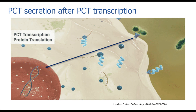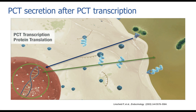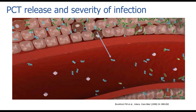Once the toll-like receptor causes procalcitonin to be produced, we can measure it within three to six hours. Importantly, there is nothing — no drug or other stimulus — that can keep you from making procalcitonin if bacteria is present. If you have bacteria, you will make procalcitonin. This toll-like receptor must be activated by bacteria for PCT to elevate, and viruses cannot activate it. There is a negative feedback mechanism with interferon, so procalcitonin is never elevated in a pure viral infection.